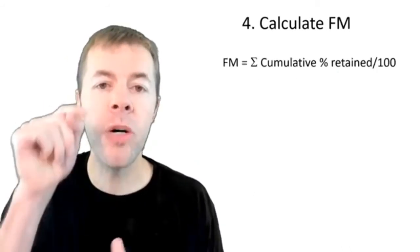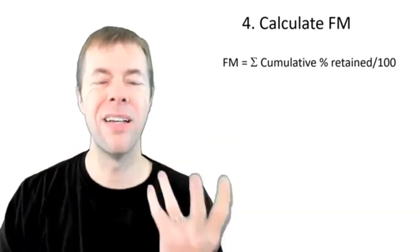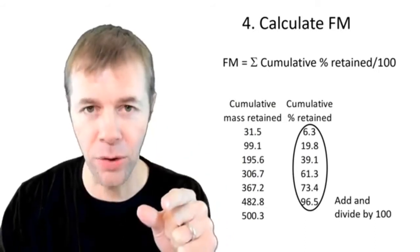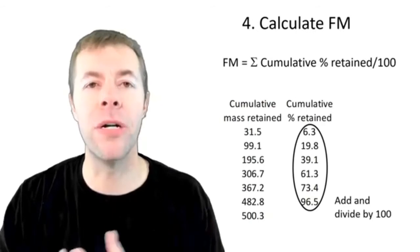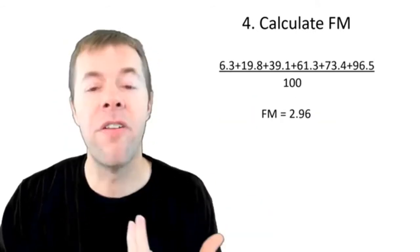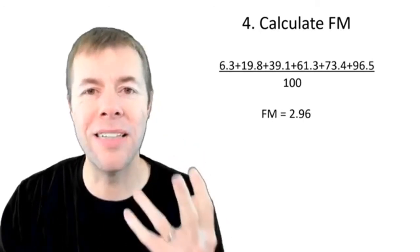Now my final step is I'm going to sum the cumulative percent retained and then divide that by 100. What? Kind of confused. I'm going to take all those numbers I just calculated, sum them all together and divide by 100. Here's me doing it numerically. Sum all those values, divide by 100, and I get a fineness modulus of 2.96.